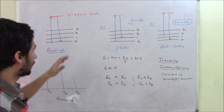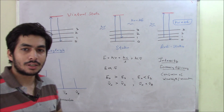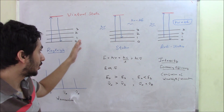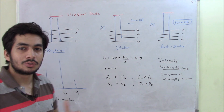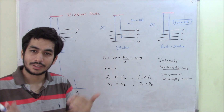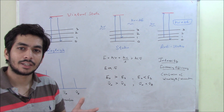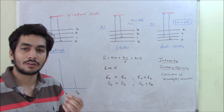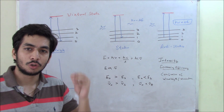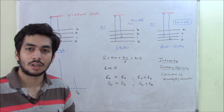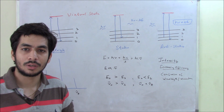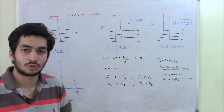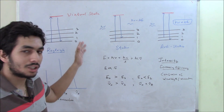There was a very interesting doubt asked: what are these energy levels written as 0, 1, 2, 3? These can be vibrational energy levels, these can be rotational energy levels, or they can be both vibrational and rotational. It depends on what kind of Raman Spectroscopy you are dealing with. You might have heard of pure rotational Raman Spectroscopy, pure vibrational Raman Spectroscopy, and rotational-vibrational Raman Spectroscopy.